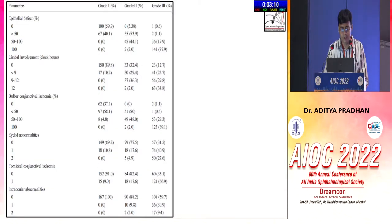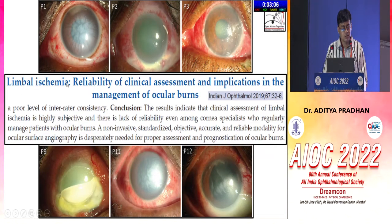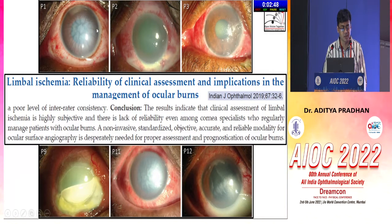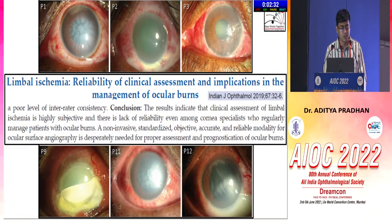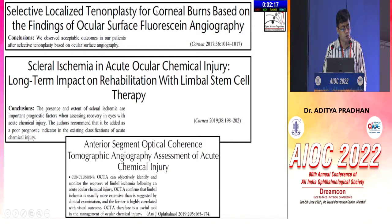We know that limbal ischemia gives rise to worse prognosis. A study from IGO in 2019 presented photographs to cornea specialists, general ophthalmologists, and fellows, asking them to grade images on the Dua scale. There was wide disagreement between specialists and general ophthalmologists because photography of ischemia is highly subjective. We still don't have a fully objective classification system covering all aspects, especially the scleral component.